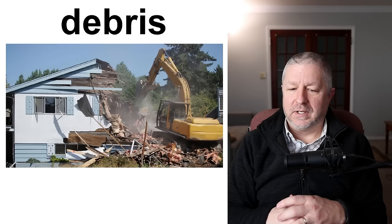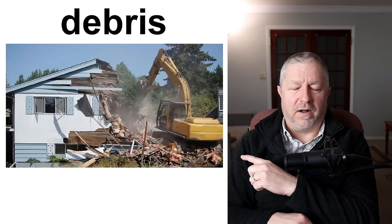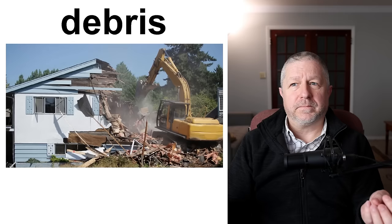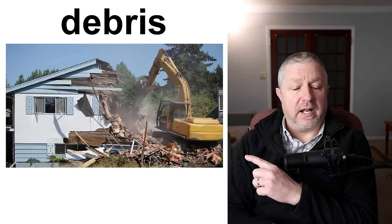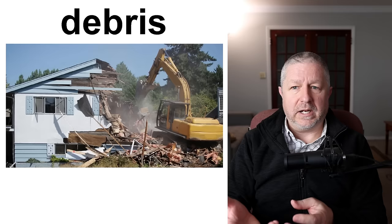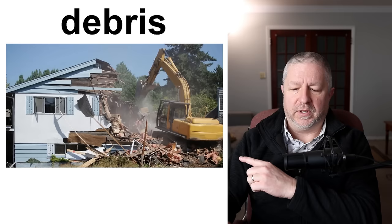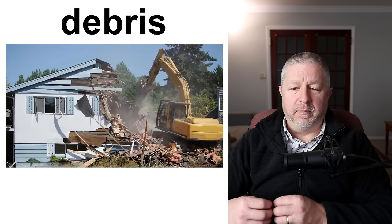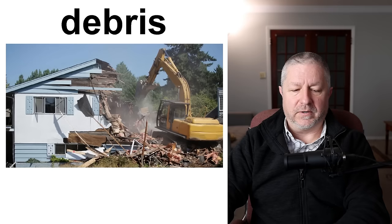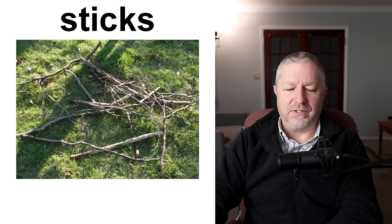Debris. I noticed the other day — and this is where this lesson came from — that there is an old house down the road from me and they are tearing it down. You can see there's a lot of debris on the ground. Debris refers to garbage or junk, but not household garbage — it's usually from a building or something else. Often after a natural disaster there's lots of debris. If there's a hurricane or tornado and it destroys buildings, we would refer to all of that as debris on the ground. It's a funny word: there's an S on the end but you don't say it.